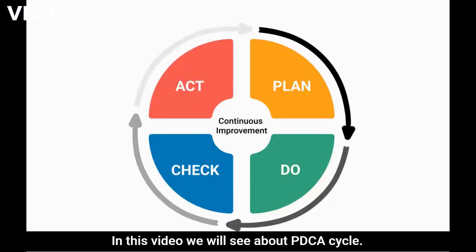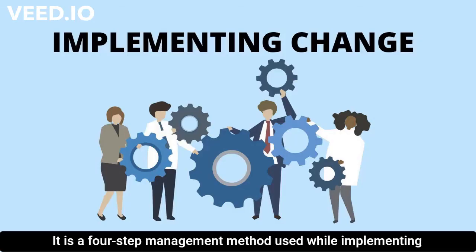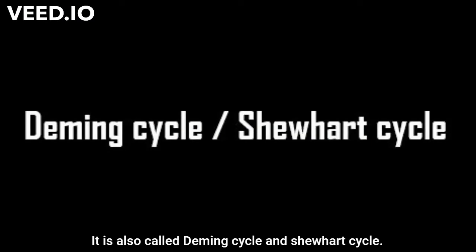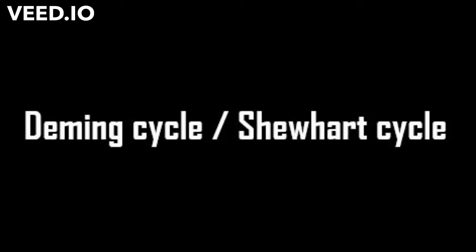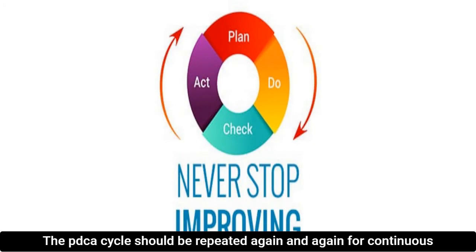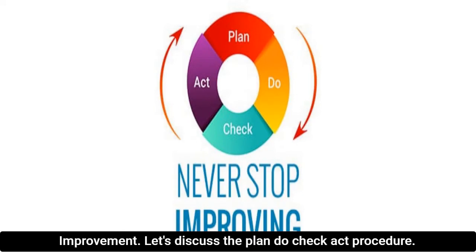In this video we will see about the PDCA cycle — Plan, Do, Check, Act. It is a four-step management method used while implementing any changes in an industry. It is also called the Deming cycle and the Shewhart cycle. The PDCA cycle is a continuous improvement tool and should be repeated again and again for continuous improvement.